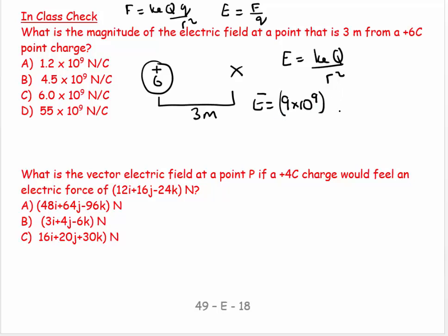And then q, q in this case is 6. And then, it's still an inverse square relationship. So that would be 3 squared. And this equals 6 times 10 to the 9 newtons per Coulomb. 6 by 10 to the 9 newtons per Coulomb. That's a massive number.